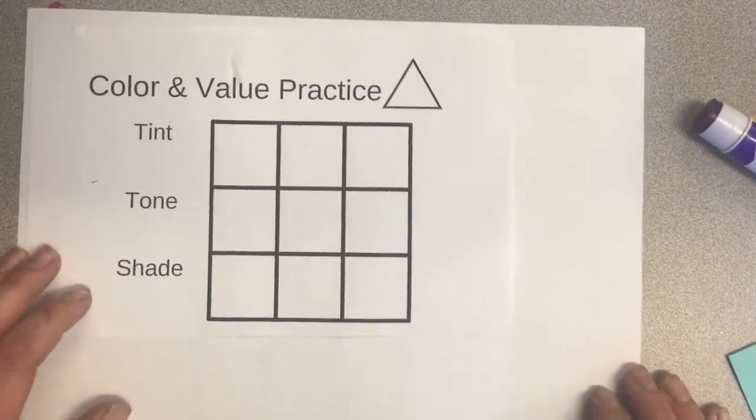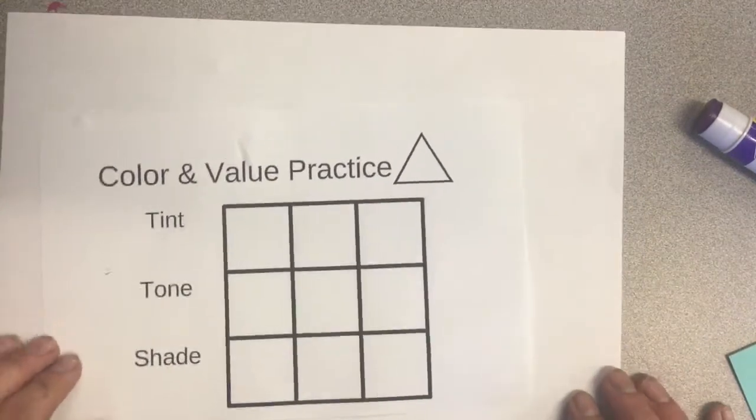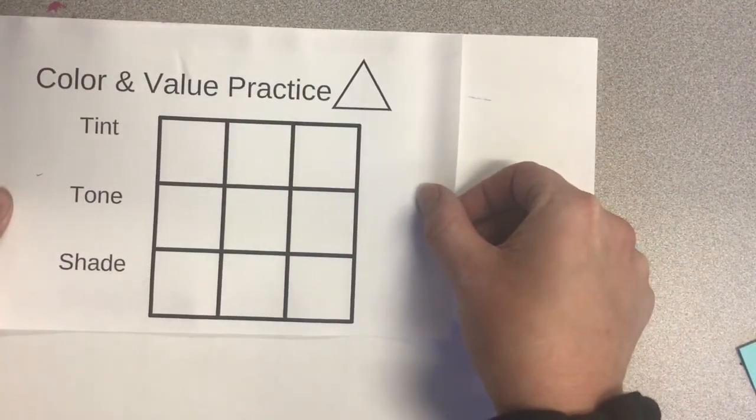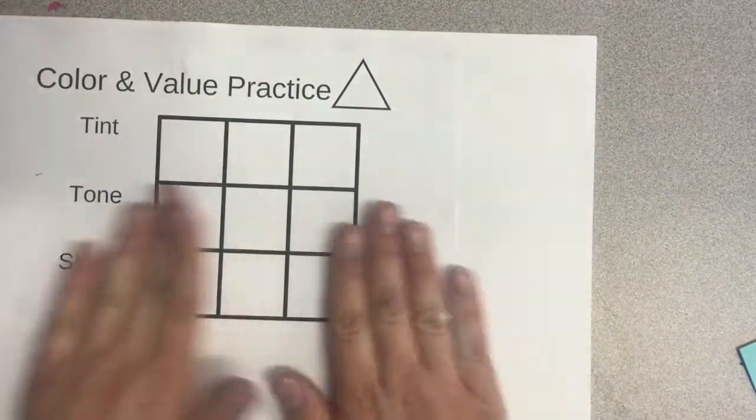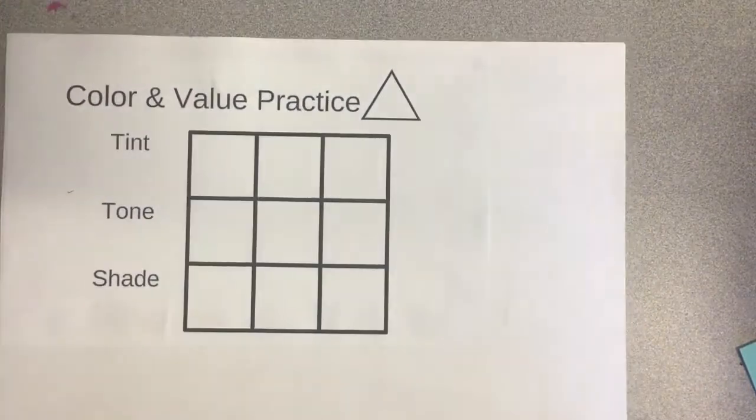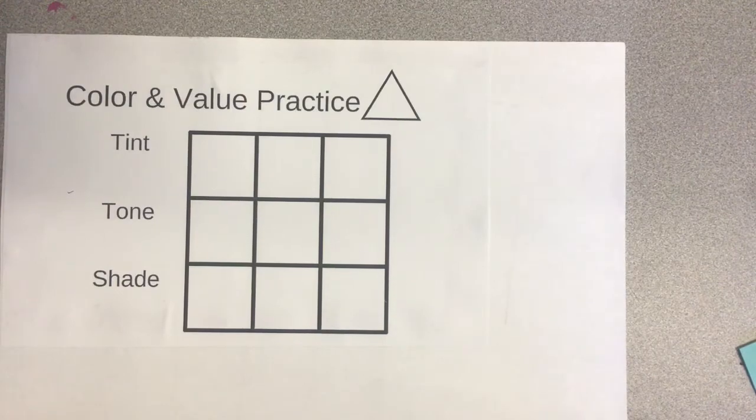The first thing you're going to want to do is glue this to your piece of paper. This is going to help you practice creating many values from many different colors. First you want to put your name on your paper.